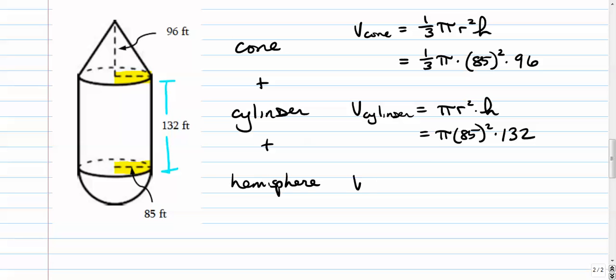And then finally we're going to add the volume of the hemisphere. It's half of a sphere: four thirds pi r cubed over two, and that's equal to, when you simplify it, two thirds pi r cubed. And the radius of that, of course, is 85 to the third power.